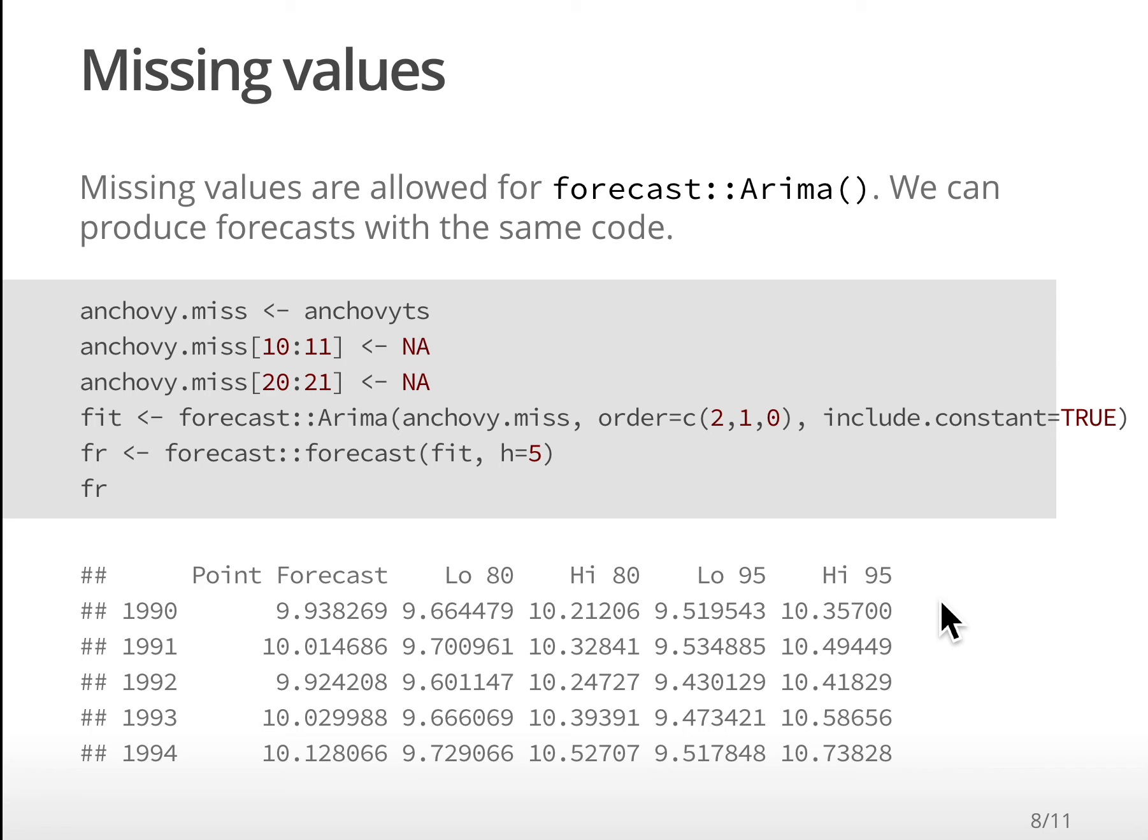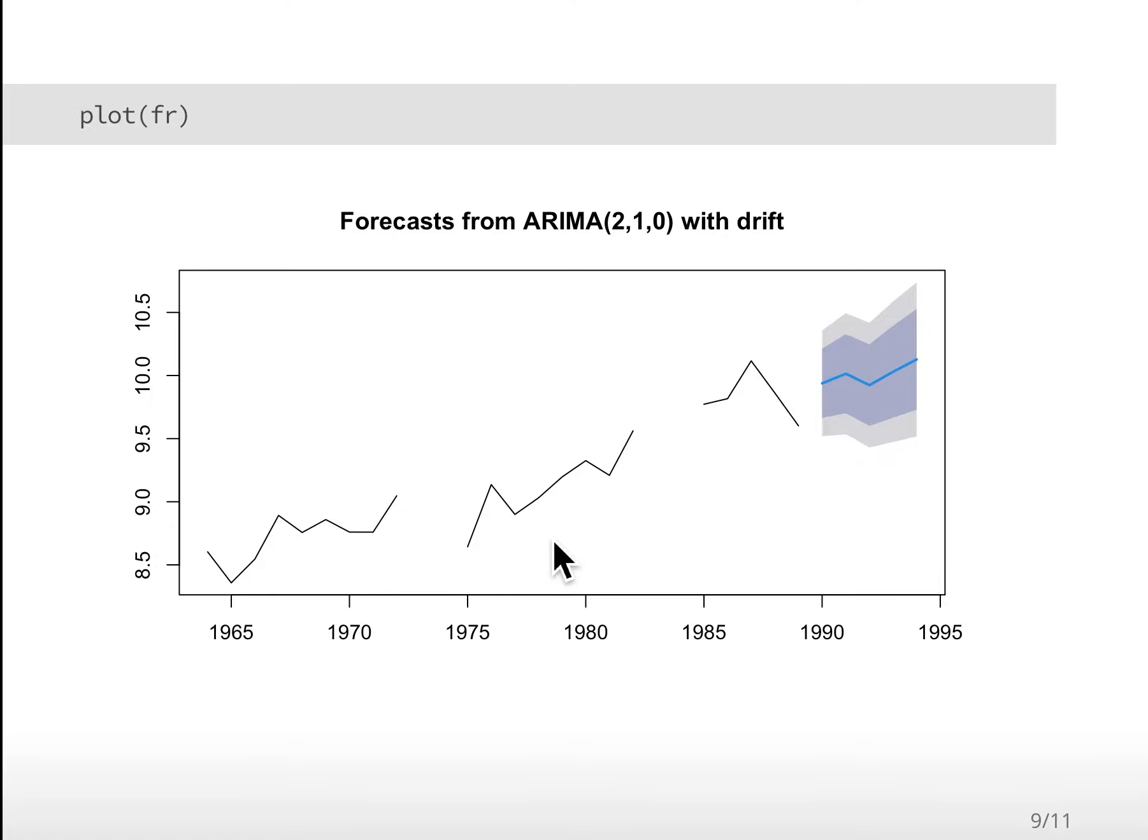Missing values are no problem. Whenever you're creating these time series, we're working with discrete time steps. In this case, it's yearly data. If we have any missing years, we just include those as NAs. Here I include a number of NAs, and I can still fit that model and do my forecast.